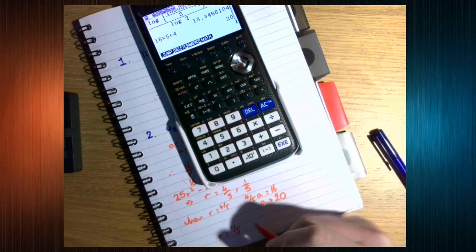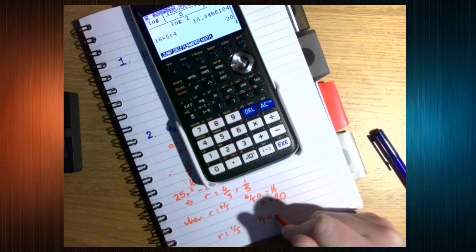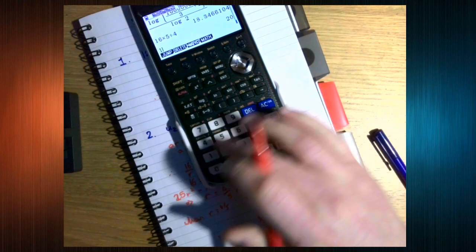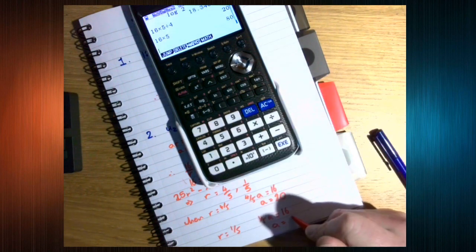When r equals a fifth, a fifth a equals 16. a equals 16 times 5 is 80.